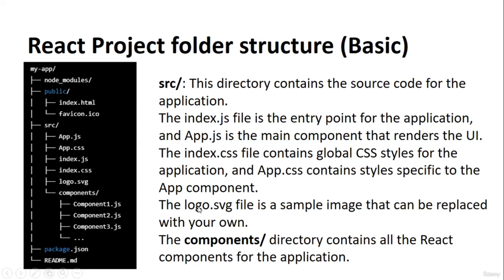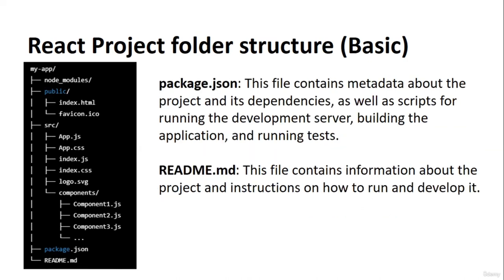Inside 'src' we also have index.css which contains the global CSS for our project. There's also App.css which contains CSS specific to the App component, and a logo file which is just an image for the default React logo — we always replace this with our own logo. Most importantly, the src folder has a 'components' folder that contains all the React components for our application.